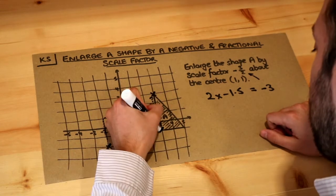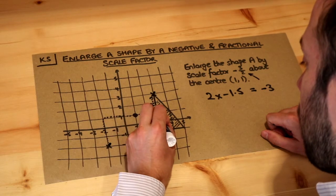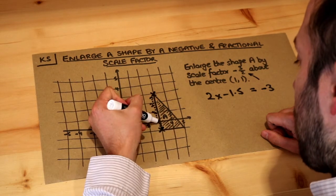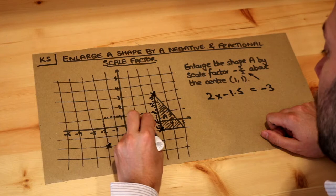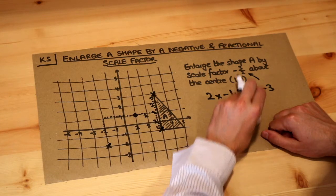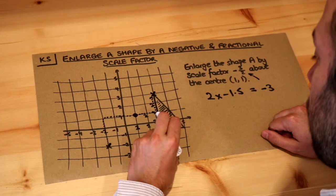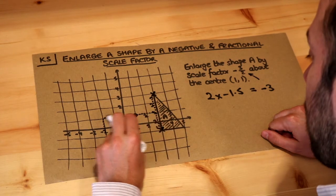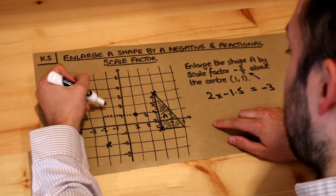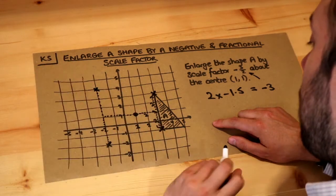For this next point, from the centre of enlargement we can see it is two right and two down. Multiplying the two right by minus 1.5 becomes minus 3, so two right becomes three left. And the two down becomes three up. So we get this point here.